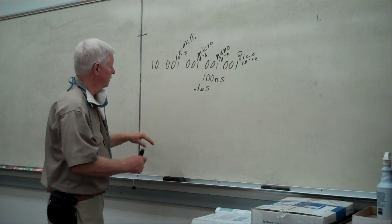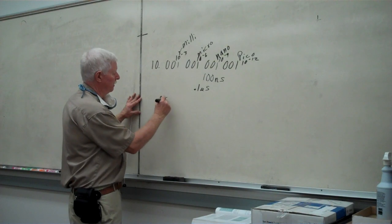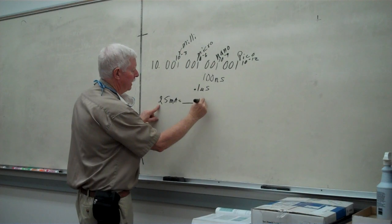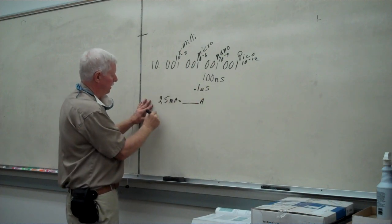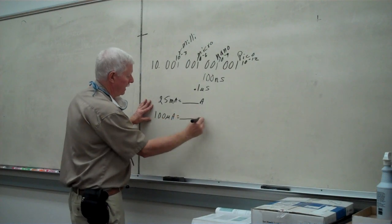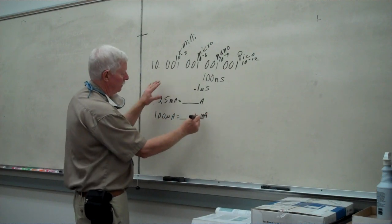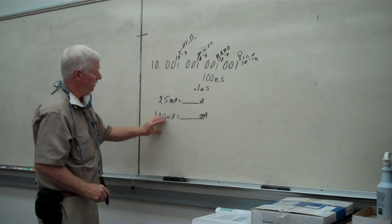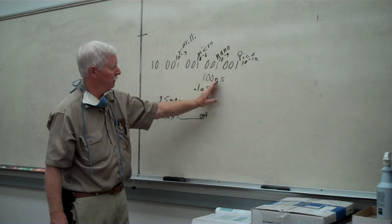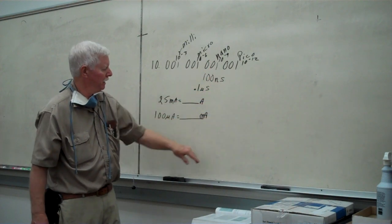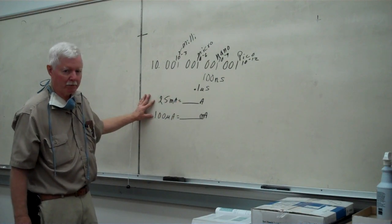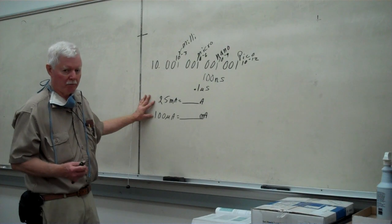Try this with different examples. Try something like: what is twenty-five milliamperes? Put this in full amperes — it's going to be a decimal value. Try something like one hundred microamperes — how many milliamperes is that? Take a look and see if this works for you. Then try it with other values going into nanoseconds, nano amperes, or picowatts, something like that. It does work — just try it, work with it. It is something that you have to keep working with to get more proficient.